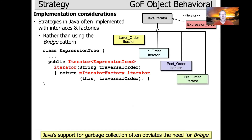In Java, strategies are often implemented with interfaces and factories rather than using the Bridge pattern. For example, the Java version of this program would have an iterator interface for the expression tree and an iterator factory method that returns a corresponding implementation, without using the Bridge pattern at all.